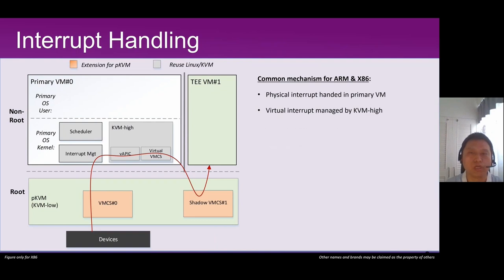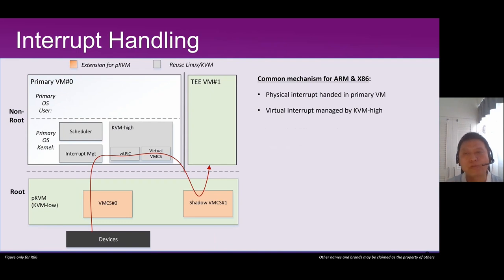Interrupt handling is straightforward. We have a common mechanism for both ARM and x86. We pass through all physical interrupts to the primary VM, so the primary VM manages all external interrupts. It then checks if an interrupt should be injected to its guests. If yes, it does virtual interrupt injection through the virtual interrupt controller, which is emulated by KVMMU. So virtual interrupts are fully managed by KVMMU in the primary VM.